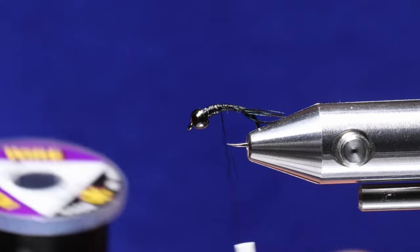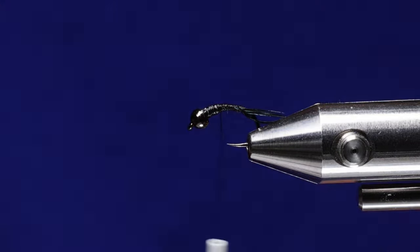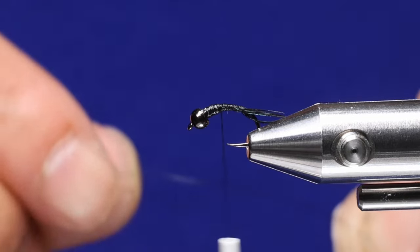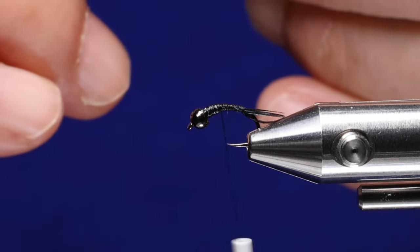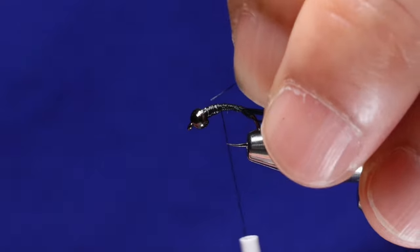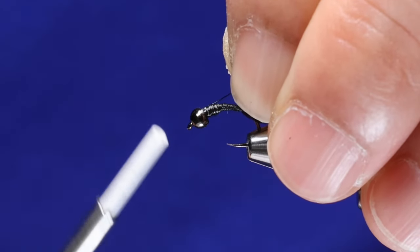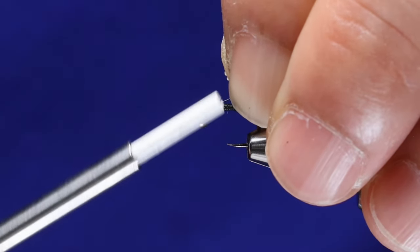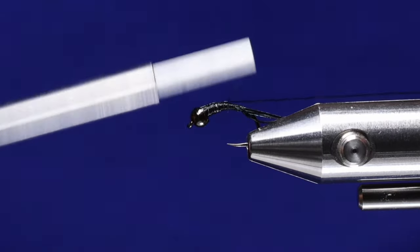Next material we're going to tie in is ultra wire extra small in black. I'm going to stick the wire just behind the bead, brace it, and then wrap it to where the tail stops.